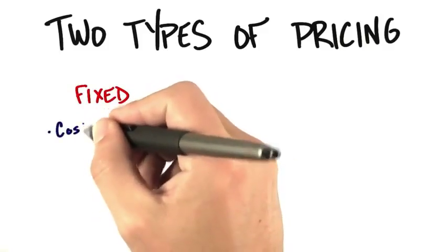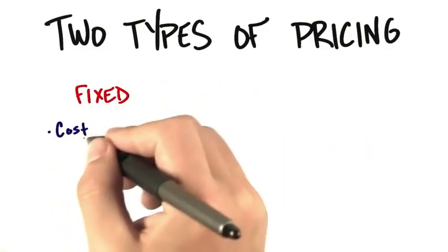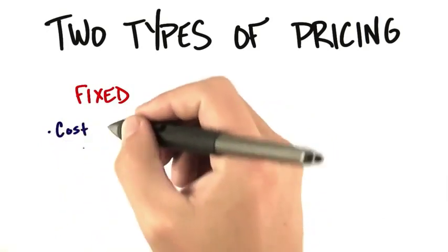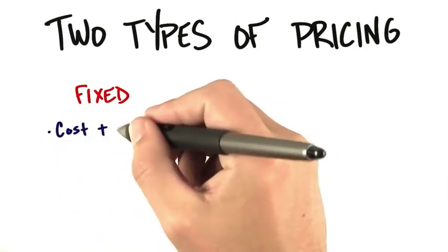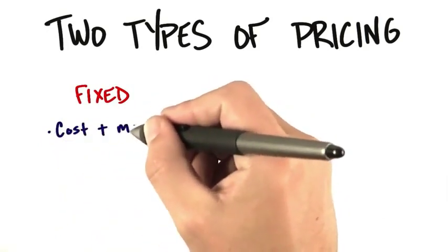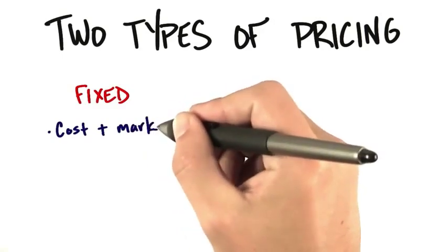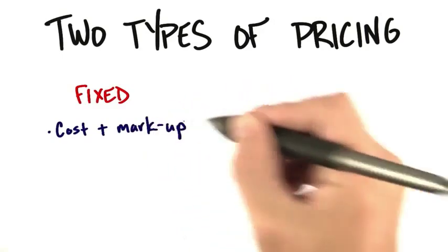With fixed pricing, you could decide: I'm going to take the cost of what it takes me to build the product, and I'm going to add some fixed markup — whatever I think my profit should be. And it's very simple. It's cost plus markup.